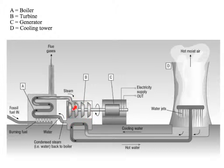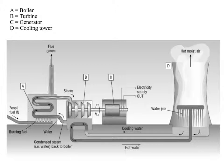So thermal energy is converted into kinetic energy to turn the turbine. The turning of the turbine spins the generator, which turns kinetic energy into electrical energy. This electrical energy is then fed into the national grid, which we'll see later.